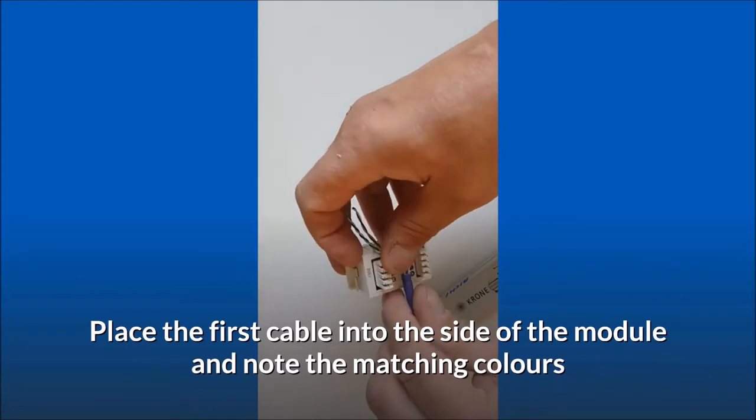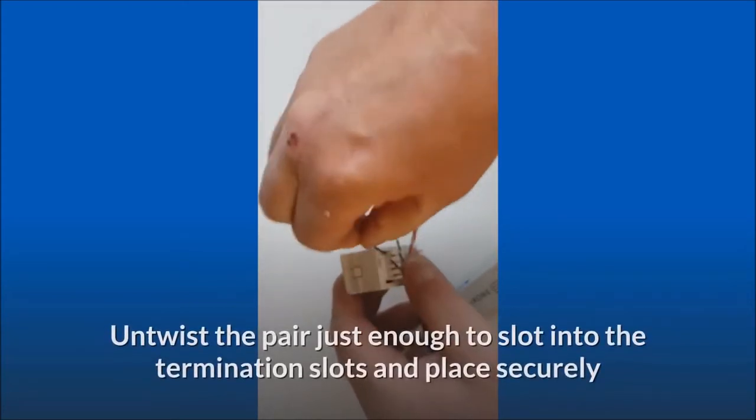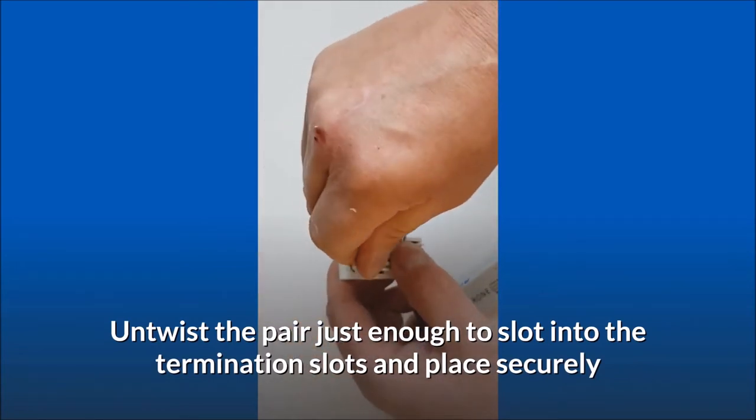Place the first cable into the side of the module and note the matching colors. Untwist the pair just enough to slot into the termination slots and place securely.